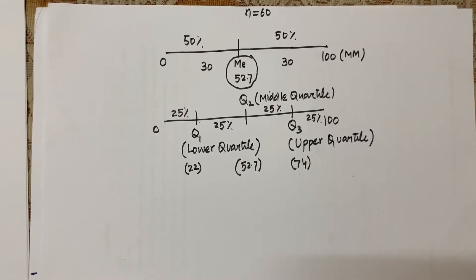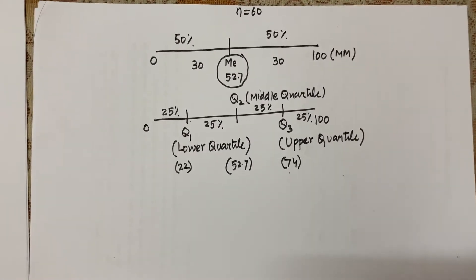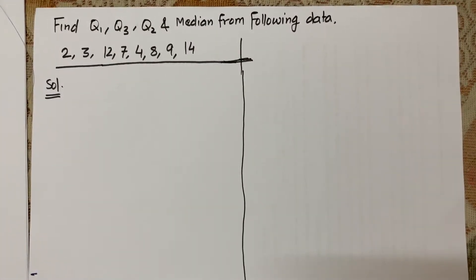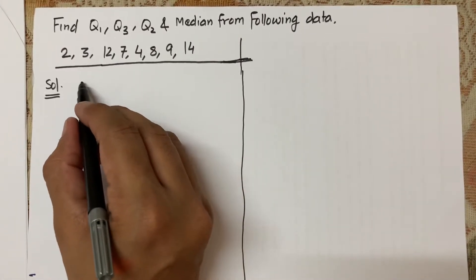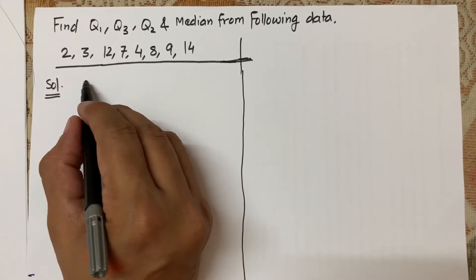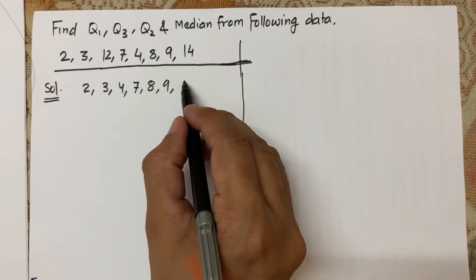Now we will understand how to calculate quartile in a discrete ungrouped distribution. The question has marks of students in a data set. I will be calculating Q1, Q3, and Q2, and also median to verify that median is always equal to Q2. Step one is to arrange the data in ascending order: 2, 3, 4, 7, 8, 9, 12, and 14.